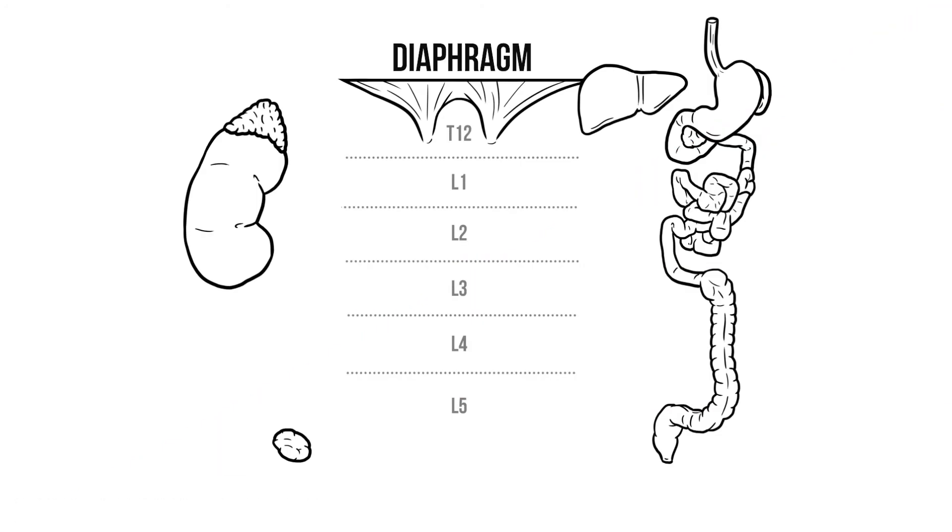So at the top we have the diaphragm with the vertebral levels of the body coming down. We then have some structures that receive their blood supply from the aorta.